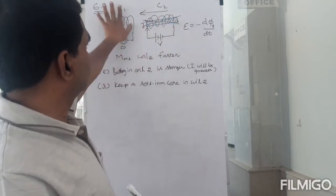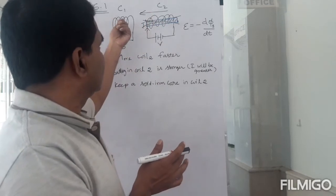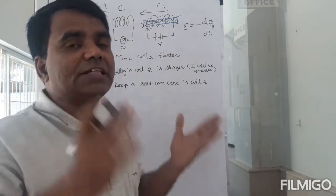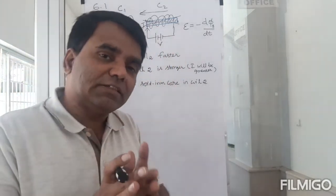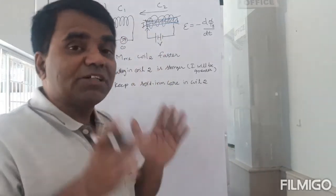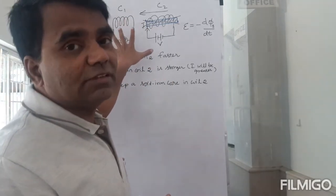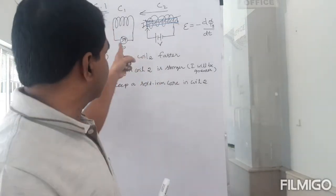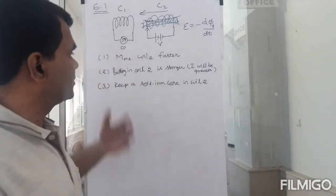As you bring the coil closer, you now have a much stronger magnetic field. A stronger magnetic field implies greater magnetic flux, which implies greater magnetic flux change in coil 1, which implies a greater induced EMF, which implies greater current, and therefore greater deflection.